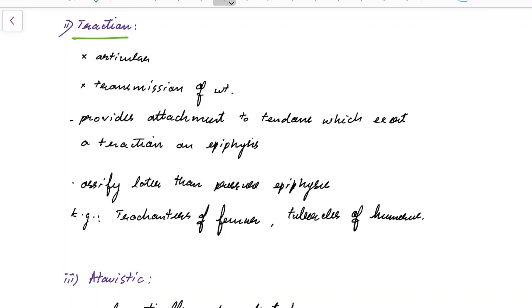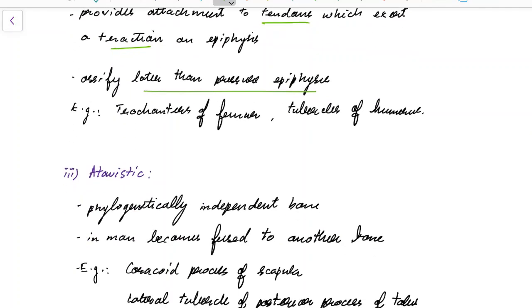Traction Epiphysis are not Articular and they do not take part in transmission of weight. They provide attachment to tendons which exert traction on Epiphysis. Traction Epiphysis ossify later than Pressure Epiphysis. Examples for Traction Epiphysis include Trochanters of Femur and Tubercles of Humerus.